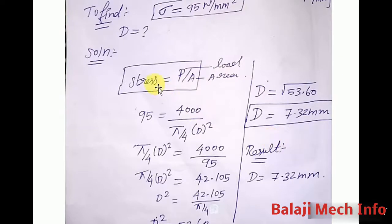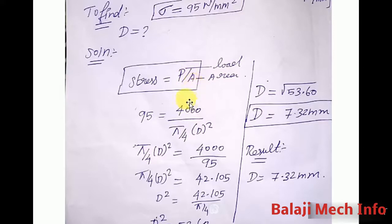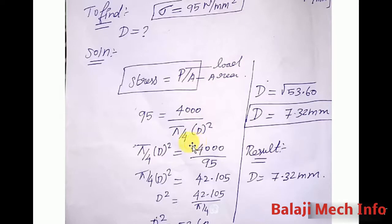Stress is equal to load divided by area. You know the formula. Stress equals P divided by A, where P is the load and A is the area. Stress is 95, load is 4,000. We use the formula: area equals (π/4) × D².